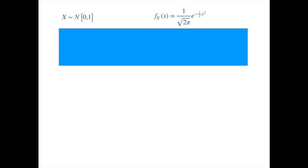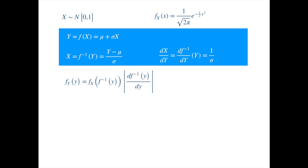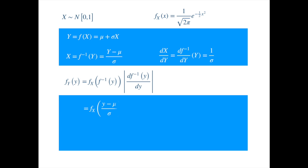Now, let's assume X is standard normal. Recall that the density of a standard normal variable is as follows. Now, let's assume we have been asked to calculate the density of a linear function of X under the same probability measure. We will need the inverse function and the derivative, which we quickly calculate. Now, let's recall the density transformation formula. Plugging in the inverse function and its derivative, we get. Replacing the function f with the density of standard normal, we get the normal density.